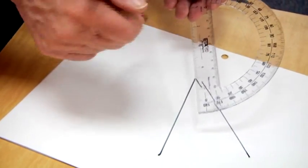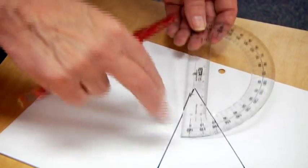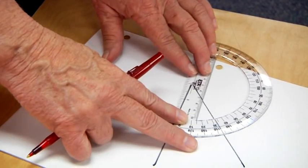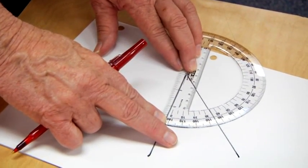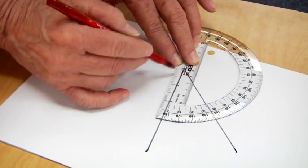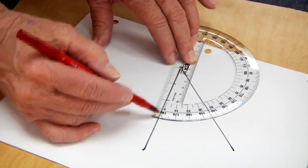the first step you want to do: locate the hole here in the center and put that at the vertex or the tip of the angle which you want to measure, then line up the protractor going straight across the line.